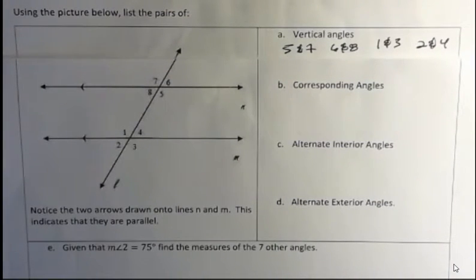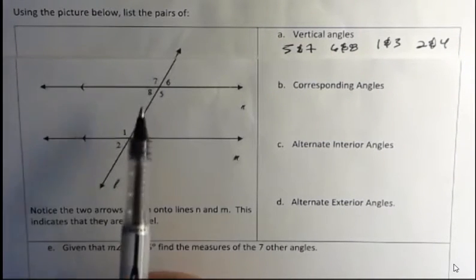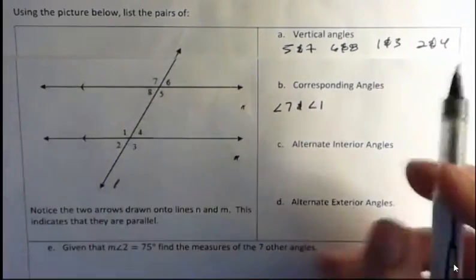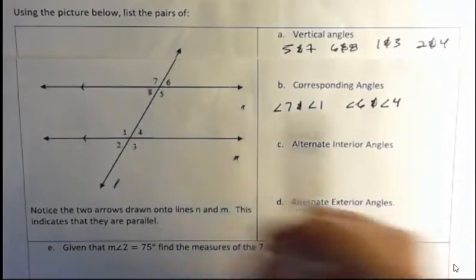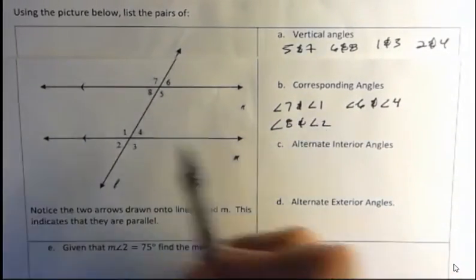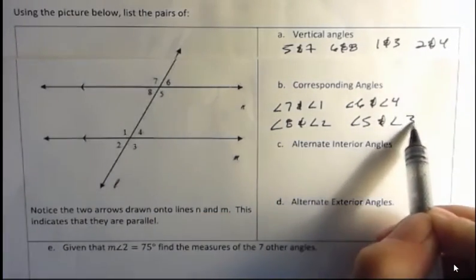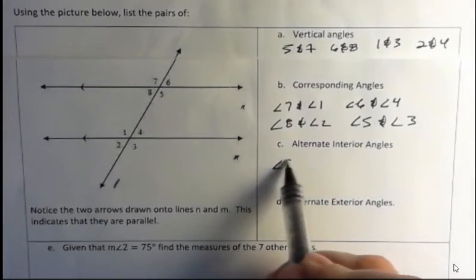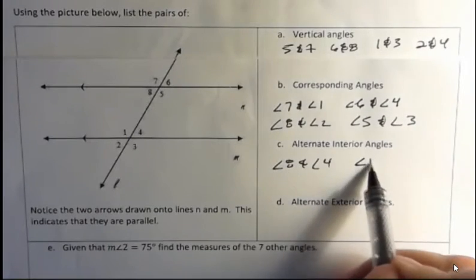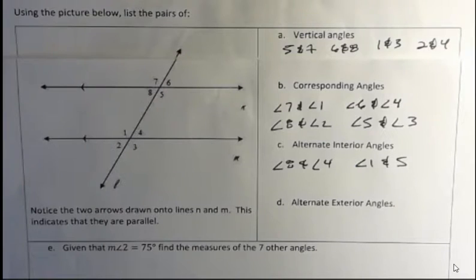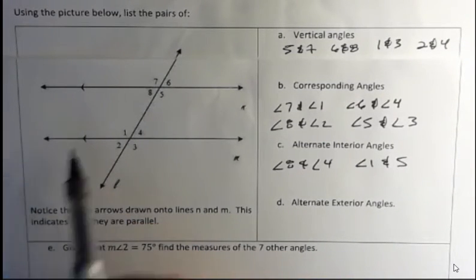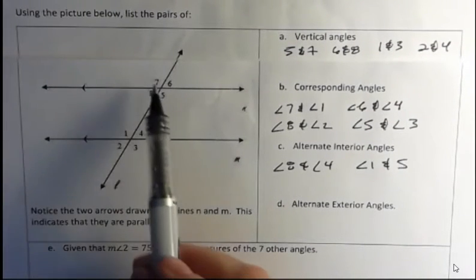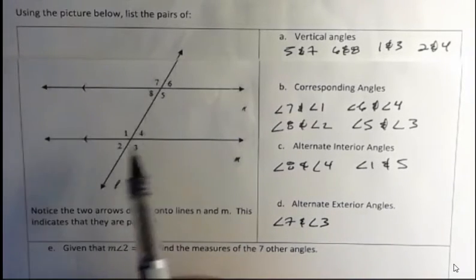What about the corresponding angles? Remember, corresponding angles are in the same position but on the other line. Angle seven corresponds to angle one, six corresponds to four, eight corresponds to two, and five corresponds to three. For alternate interior angles — inside the picture on alternate sides — we have eight and four, and one and five. Remember this is only true because the lines are parallel, indicated by the little arrows on the lines. For alternate exterior angles — outside the picture on opposite sides of the transversal — we have seven and three, and two and six.